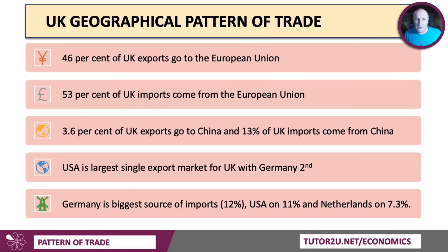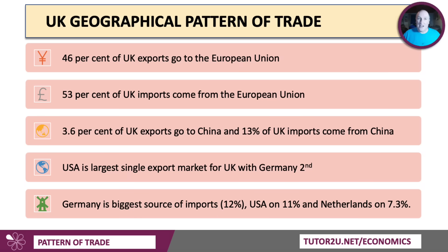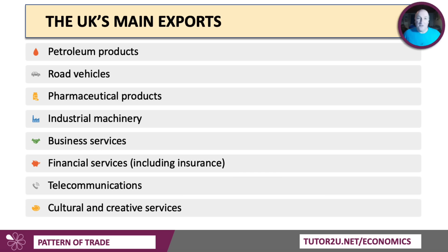In terms of the UK, despite the fact we left the European Union three or four years ago, just under half of our exports still go to the EU and well over half of our imports. So the European Union is far and away our biggest single trade partner as a bloc. About 4% of our exports go to China, whereas 13% of our imports come from China — a clear trade imbalance. The United States is the single biggest individual country with whom we trade, and Germany is second.